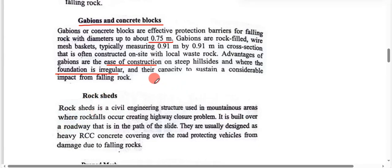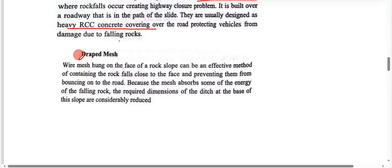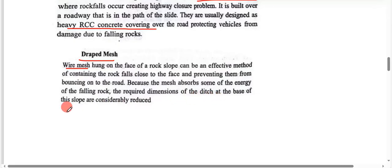Rock shed is a civil engineering structure used in mountainous areas. It is built over a roadway in the path of a slide, originally designed as a heavy reinforced concrete covering over the road protecting vehicles from damage due to falling rock. Wire mesh hung on the face of the rock slope can be effective close to the face in preventing rocks from bouncing onto the road, as the mesh absorbs some energy of the falling rock, and the required dimension of the ditch at the base of the slope is considerably reduced.